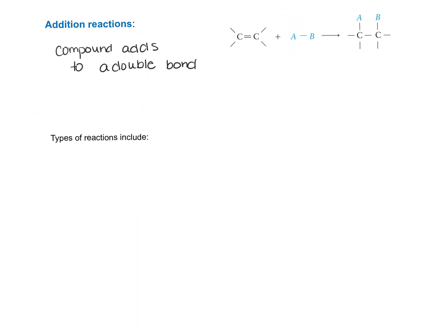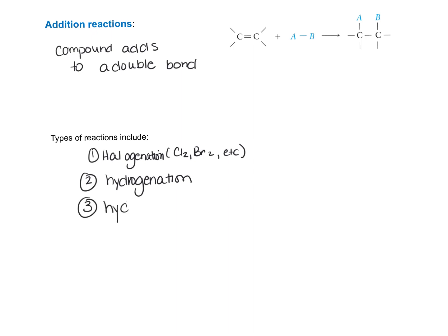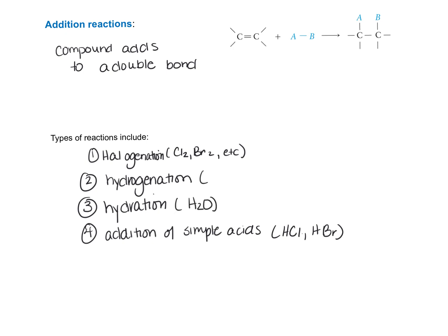There are four types of addition reactions we're going to look at in this screencast. The first type is halogenation — halogens are things like Cl2, Br2, etc. The second is hydrogenation, the third is hydration, and the fourth is the addition of simple acids like HCl and HBr. Hydration is the addition of water, and hydrogenation is the addition of H2.